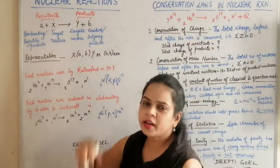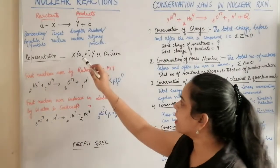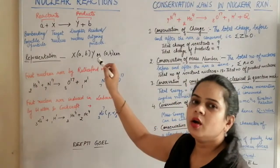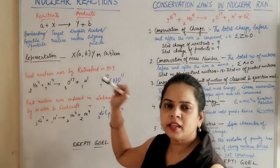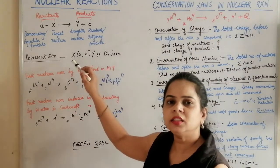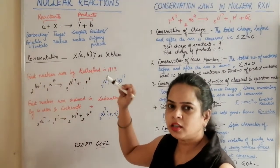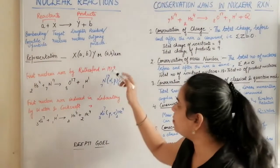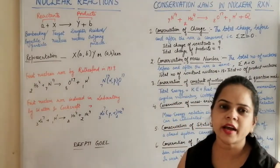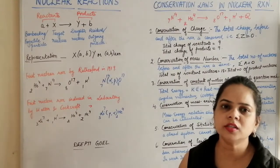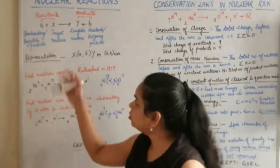This nuclear reaction is represented as X(A,B)Y, where A and B are the projectile and the outgoing particle, X is the parent nuclei and Y is the daughter nucleus. It is also simply represented as the A,B reaction, where we just write what is the projectile and what is the outgoing particle.